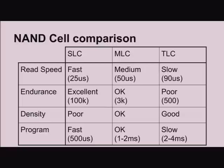With SLC you get a lot — maybe ten or maybe a hundred thousand P/E cycles, which is almost forever. But with MLC, maybe three or five thousand depending on the technology. TLC is even worse. So SLC is really good for workloads that do a lot of writing. TLC is good when you need more storage density but don't write so much.